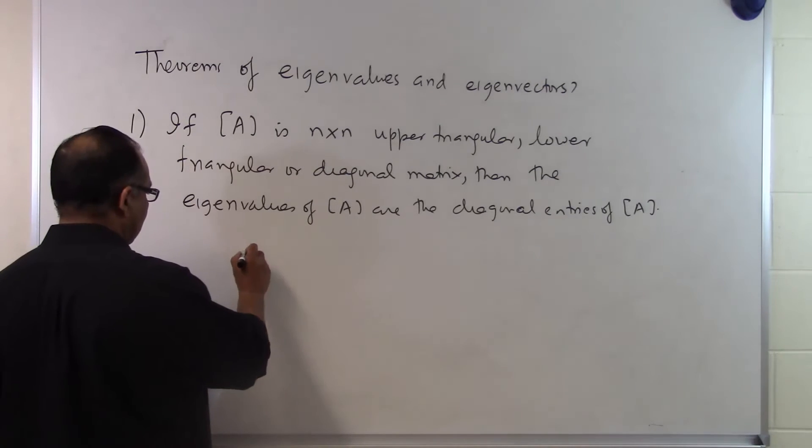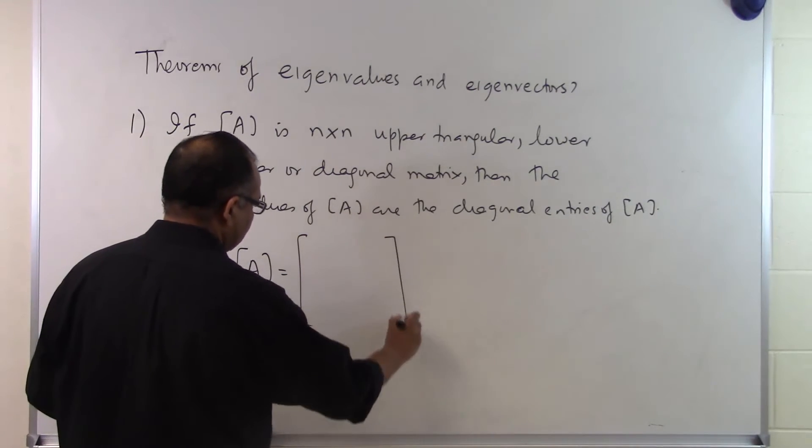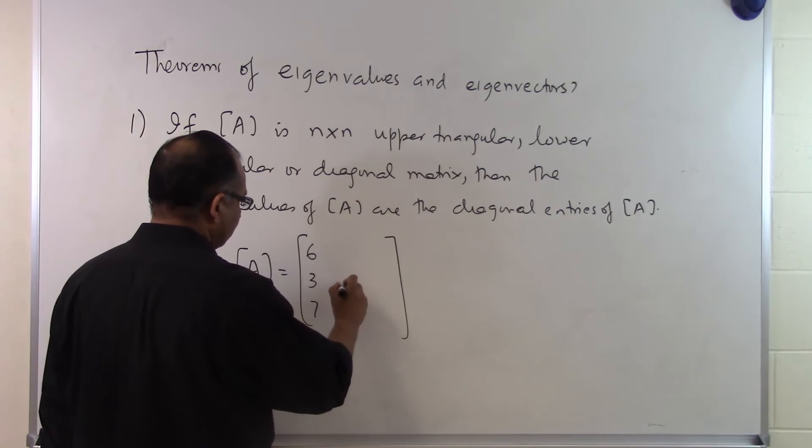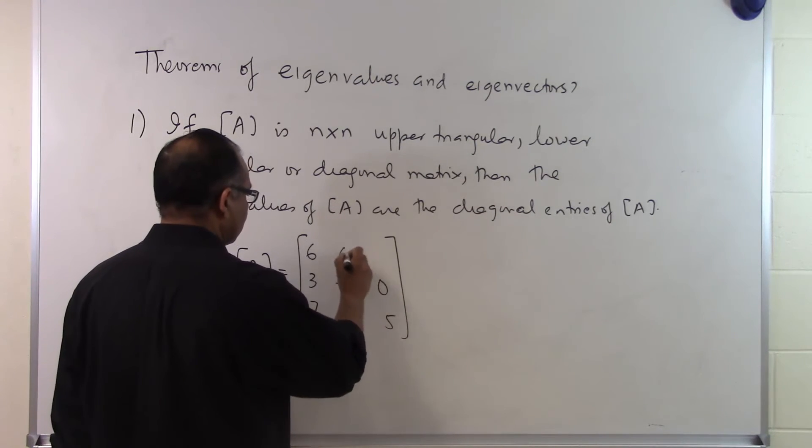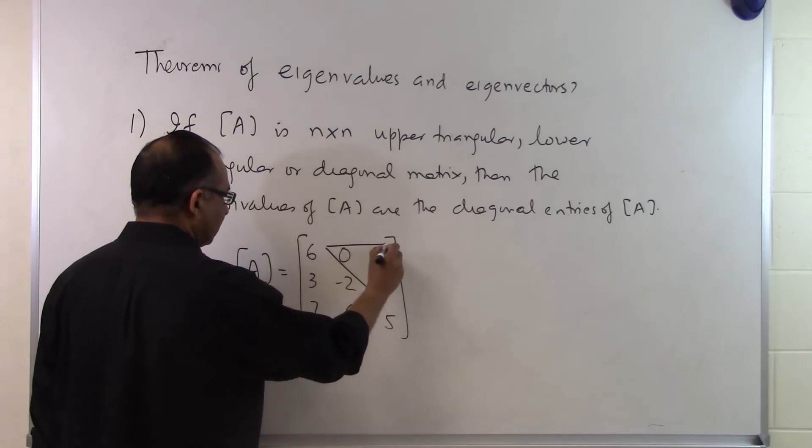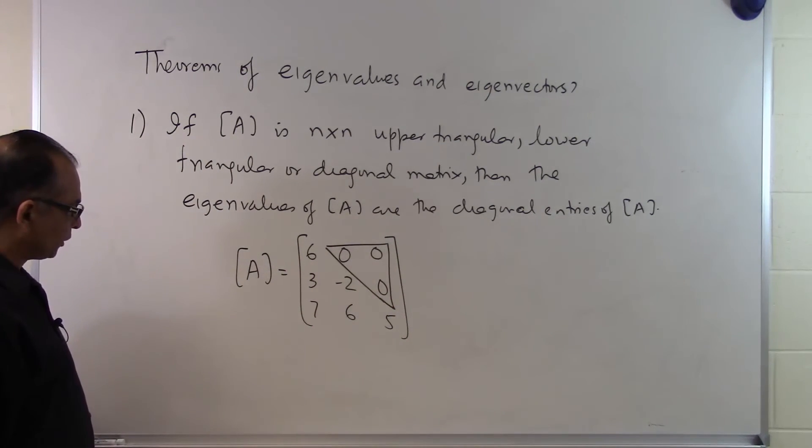So let's take an example. If somebody gives you a lower triangular matrix like this: 6, 3, 7, minus 2, 6, 5, 0, 0, 0. This is a lower triangular matrix because anything above the diagonal is 0.